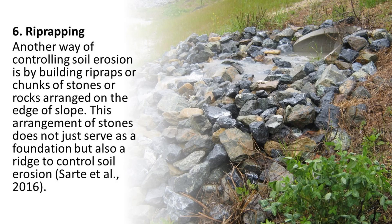6. Rip Rapping: Another way of controlling soil erosion is by building rip raps — chunks of stones or rocks arranged on the edge of a slope. This arrangement of stones does not just serve as a foundation but also as a ridge to control soil erosion.